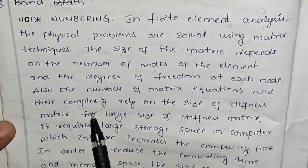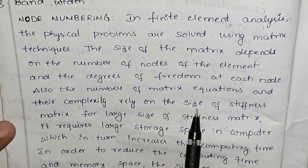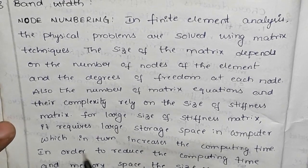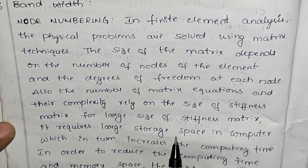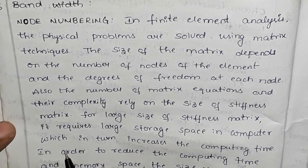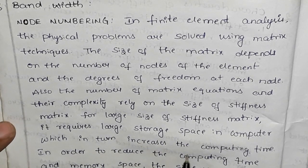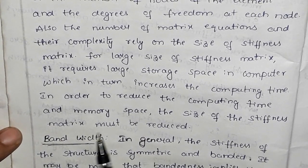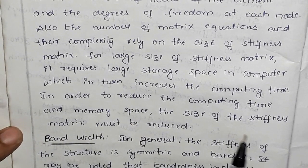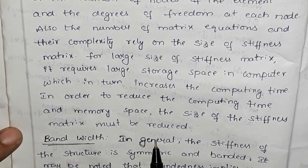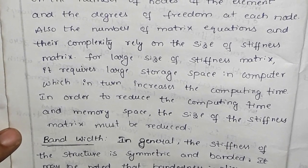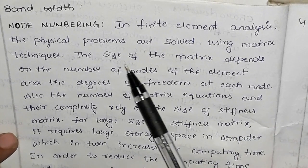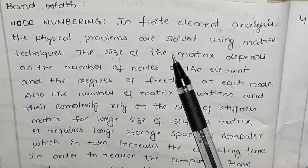The complexity of matrix equations relies on the size of the stiffness matrix. For a large size stiffness matrix, it requires large storage space in the computer, which in turn increases the computing time. In order to reduce the computing time and memory space, the size of the stiffness matrix must be reduced.